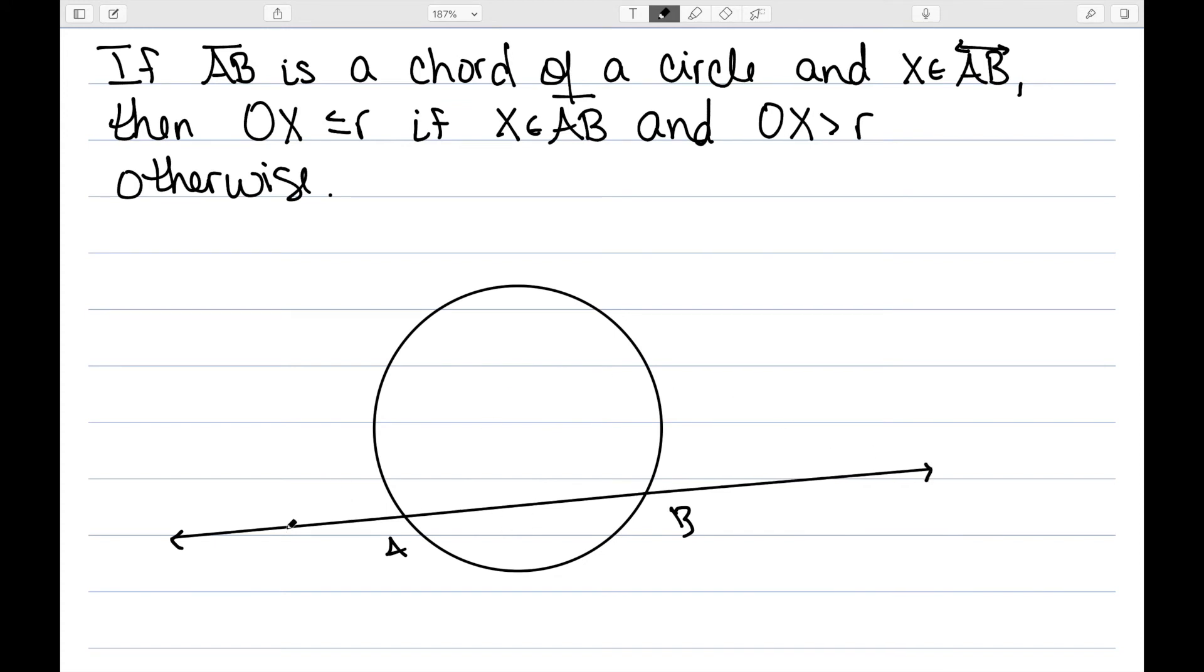Well then, if X is on the segment AB, if X is here, then it's in the interior of the circle, which we can see exactly from this picture. This distance here is less than R.